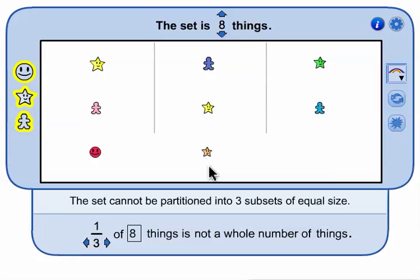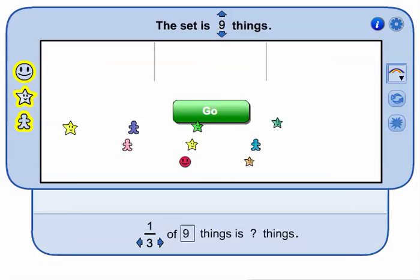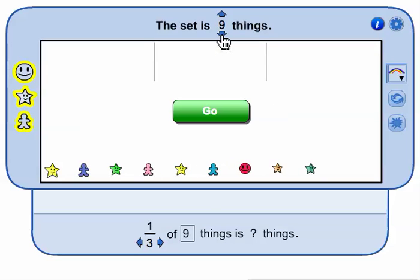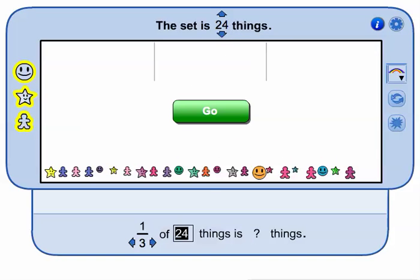You can explore partitioning with different sets. You can change the number of things in a set in 4 different ways: here, here, here, here, or here.